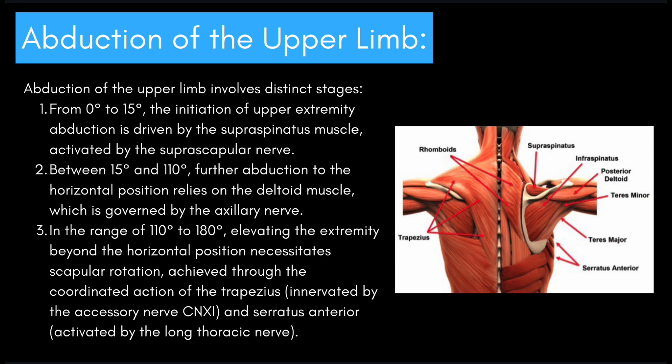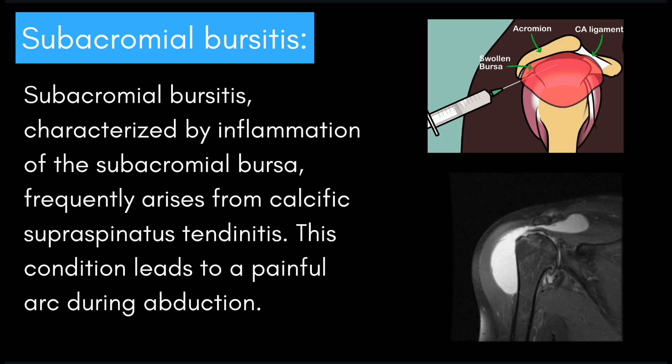In the range of 110 degrees to 180 degrees, elevating the extremity beyond the horizontal position necessitates scapular rotation, achieved through the coordinated action of the trapezius, innervated by the accessory nerve (cranial nerve 11), and serratus anterior, activated by the long thoracic nerve.